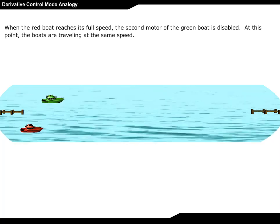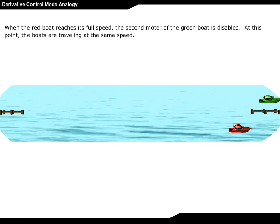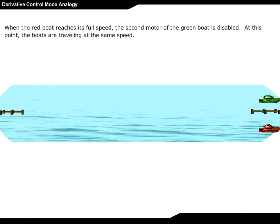When the red boat reaches its full speed, the second motor of the green boat is disabled. At this point, the boats are traveling at the same speed.